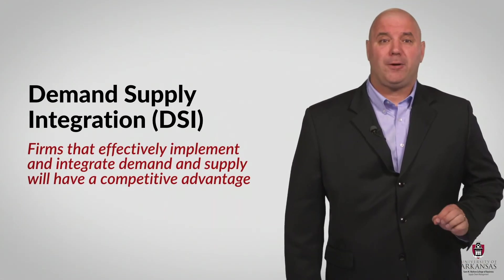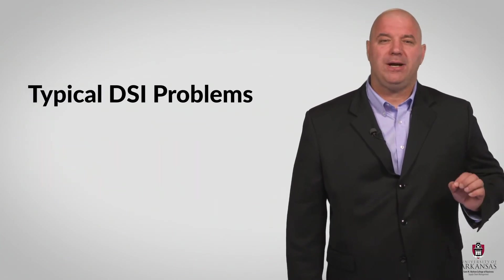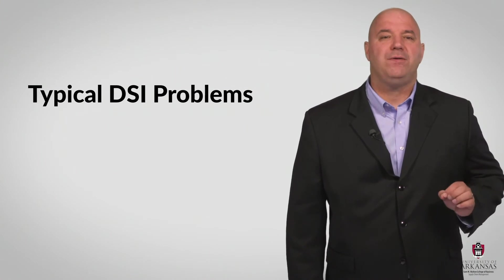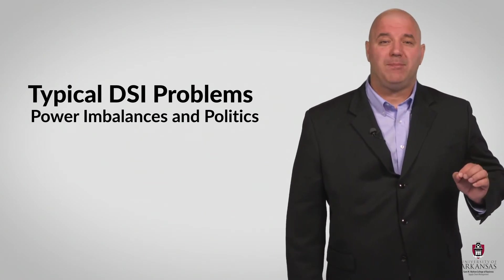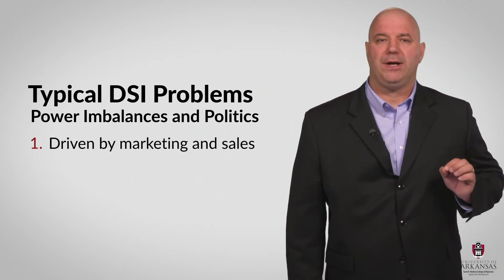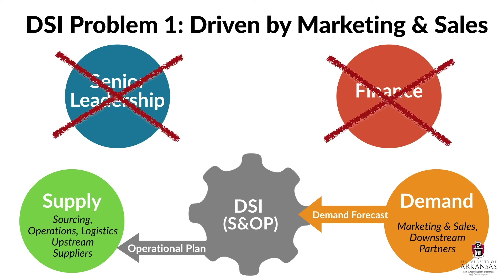Firms that effectively implement and integrate supply and demand will have a competitive advantage. However, integrating demand and supply is not very easy. Very few companies do this well because of internal power imbalances or politics. For example, some firms are completely driven by powerful marketing and sales groups. In these organizations, the uninhibited pursuit of sales at any cost dictates that aggressive sales forecasts become the operational plan. Capacity constraints or capabilities are ignored, and the supply side of the business should just figure it out. Senior management and finance are often uninvolved in these organizations, and this is a recipe for disaster.